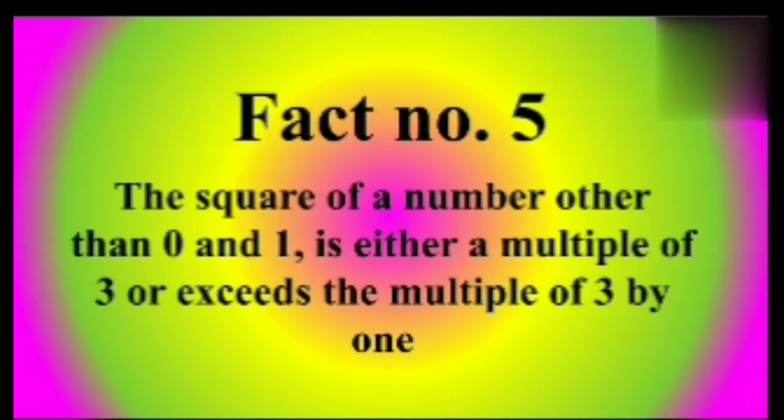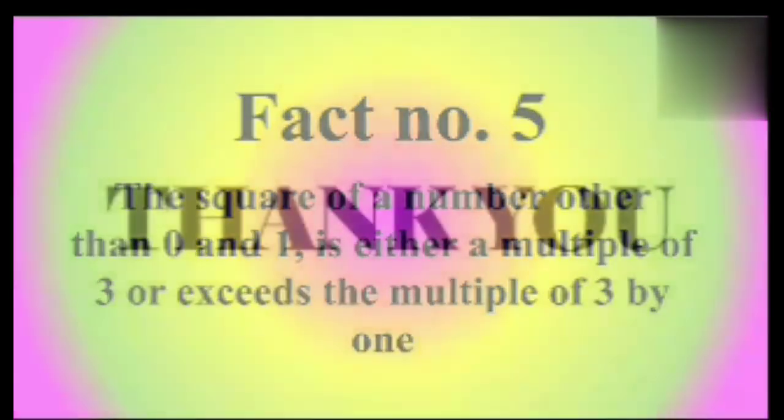Fact number five: The square of a number other than 0 and 1 is either a multiple of 3 or exceeds the multiple of 3 by 1. Thank you for watching this. Keep watching MeeMak TV.